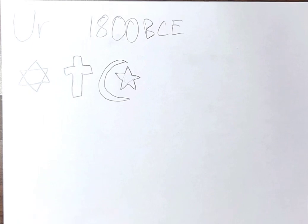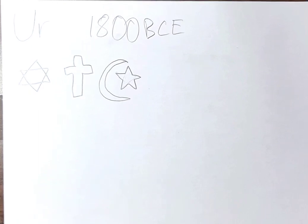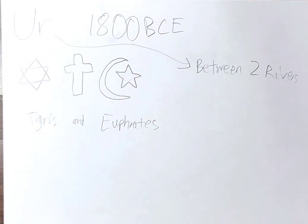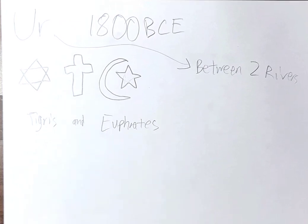Ur was in the southeast of Mesopotamia, a Greek name that means 'between two rivers' - more specifically the Tigris and Euphrates Rivers, which I've discussed plenty of times on this channel already.